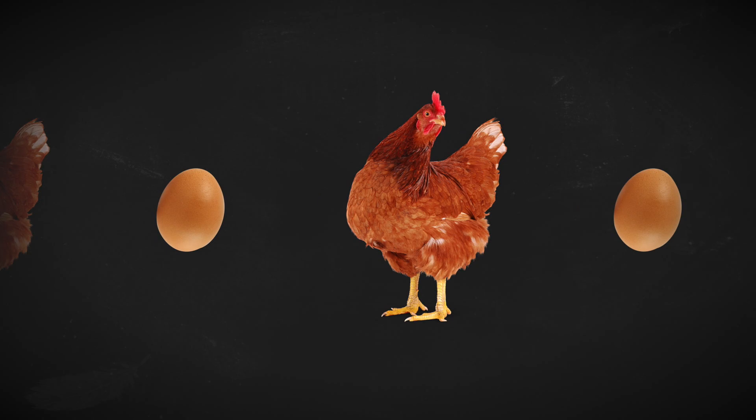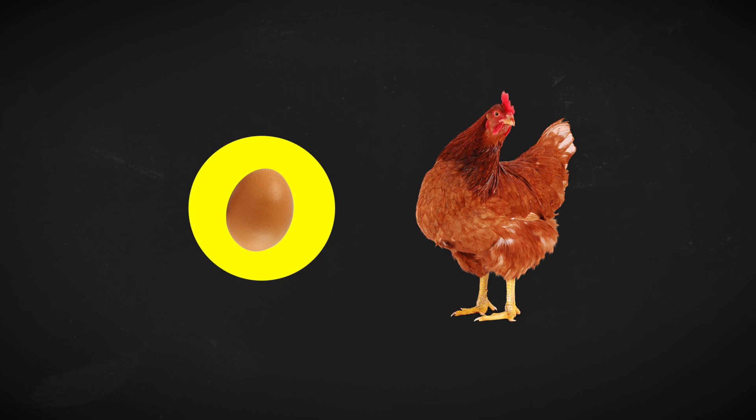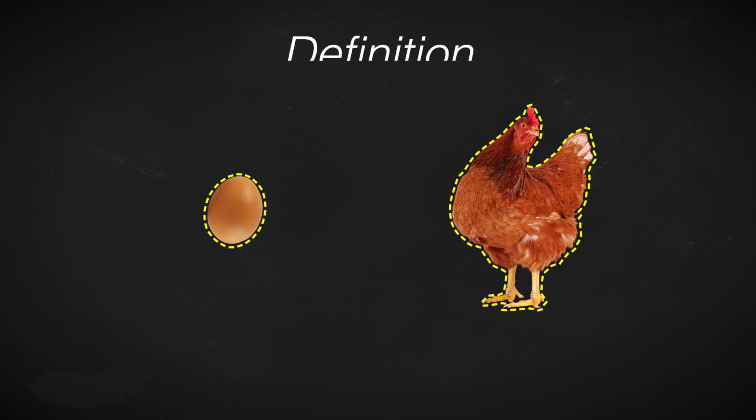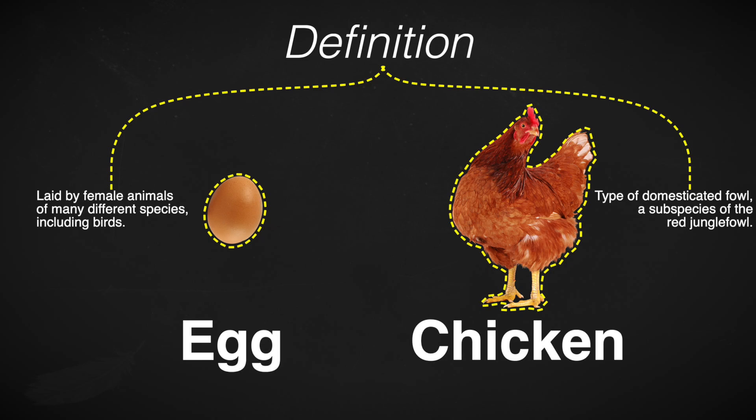Well, to be honest, it's either a chicken or an egg. I mean, there's no surprise there. But what determines if the answer is one or the other is the specific definition we assign to the words chicken and egg. Once we do that, solving this riddle becomes quite easy.